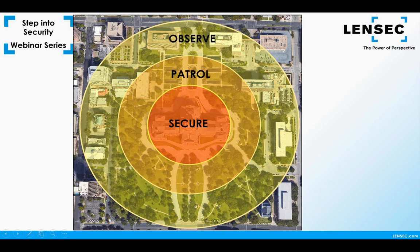Moving to one of the outer rings — the observation zone — there will be more sporadic and lighter patrolling. Awareness is not as intense as in inner zones. Surveillance cameras' placement will be lighter here, watching choke points over a large area to keep an eye on traffic moving to and from the area. And then the outer unsecure zone may not be patrolled at all — employees still remain aware, but there is little to no surveillance.